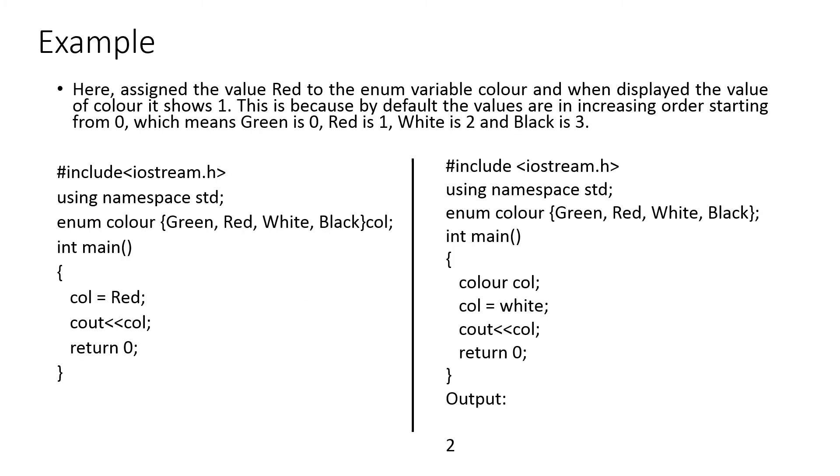The use of enum data type is explained with two examples. Here, the set of values are green, red, white and black. They are the colors. And for green, the value given is zero. For red, it is one. White, it is two. And black, it is three.